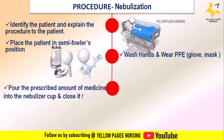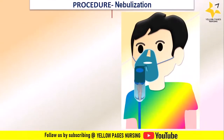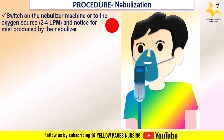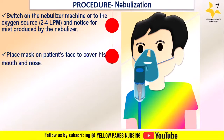Pour the prescribed amount of medicine into the nebulizer cup and close it tightly. Connect the nebulizer kit tubing to the nebulizer machine or oxygen source. Switch on the nebulizer machine or oxygen source at 2 to 4 liters per minute and notice the mist produced by the nebulizer. If there is no mist, recheck the mask and nebulizer for malfunction.